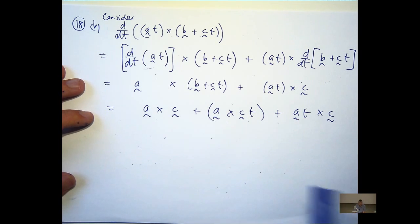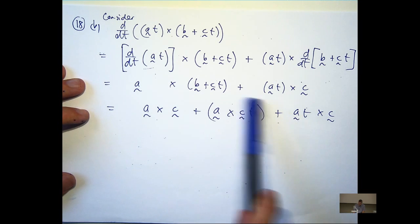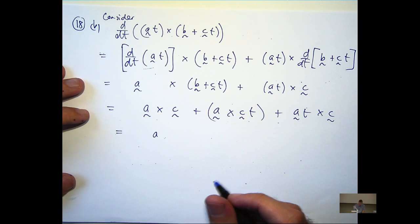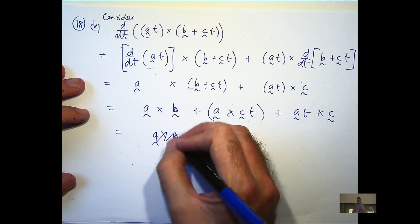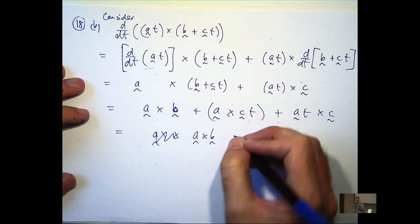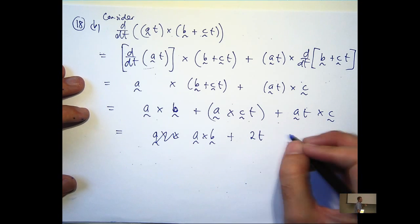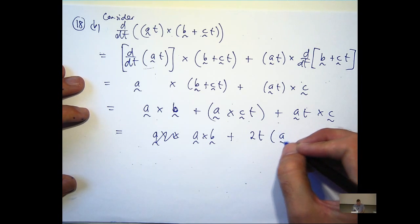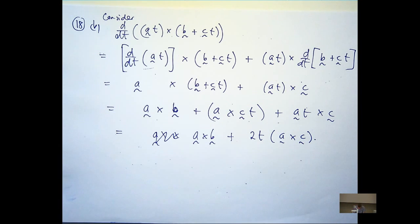I see I've almost got the same thing here. Because t is a scalar, I can pull that out. Oh yeah, you're right, thank you. A cross b. Okay, so I can pull that t out, and I've actually got 2t a cross c. So there's just knowing little identities involving the cross product.